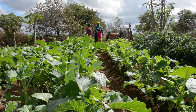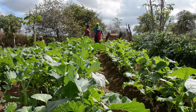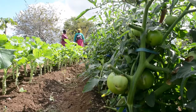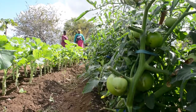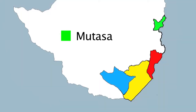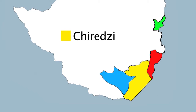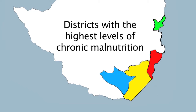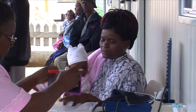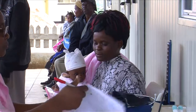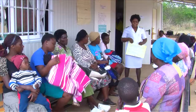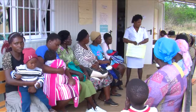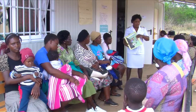Launched in 2014, the Food and Nutrition Council of Zimbabwe-led initiative was piloted in four districts: Mutasa, Chippinge, Chirezi, and Mwenezi — districts prioritized based on high levels of chronic malnutrition, food insecurity, population density of children under the age of five, and poverty rates over the last 10 years.